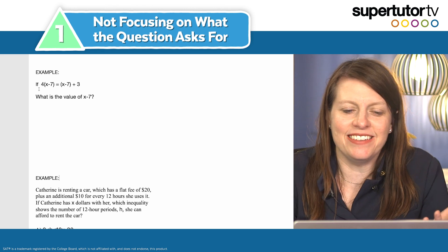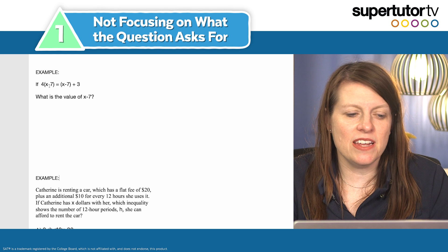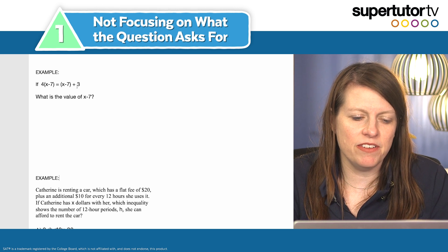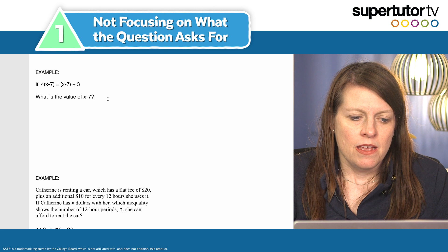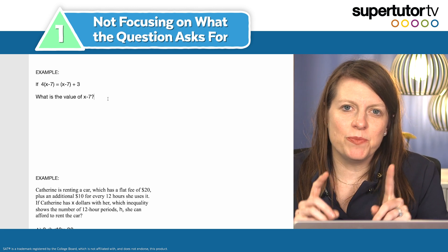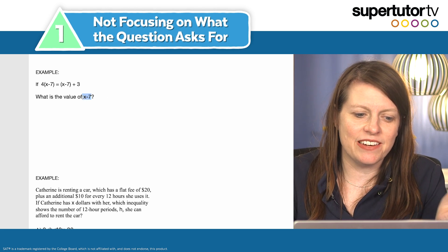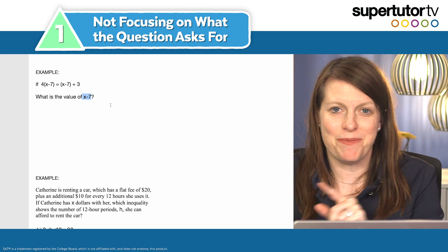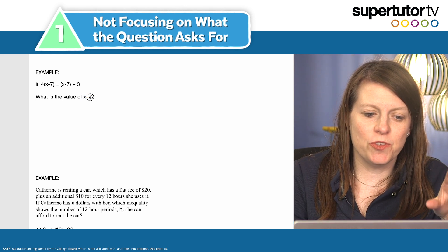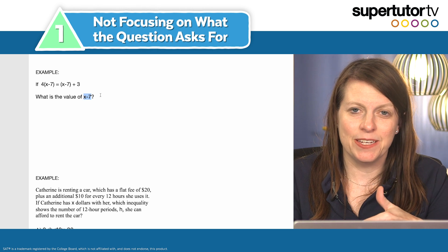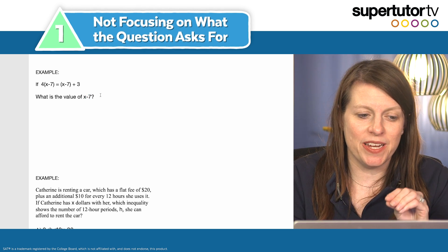This is a very classic SAT thing. Notice it says: if 4 times the quantity (x minus 7) equals (x minus 7) plus 3, what is the value of x minus 7? The mistake so many students make — and I know some of you are thinking they solve for x and put x — yes, that's a mistake, but there's a second level: not only do they solve for x and put x, but I would argue the mistake is that they solve for x in the first place.